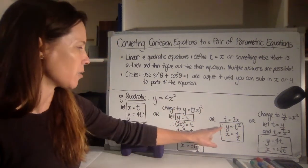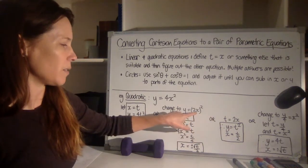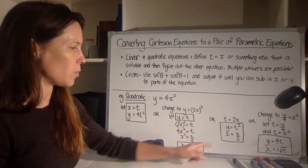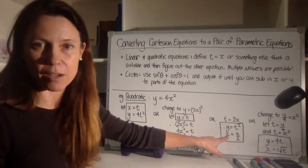This one's probably the easier. I could say let's let t be the 2x part. Now we've got y equals t squared. And if we know that t is 2x, then x must be t over 2.